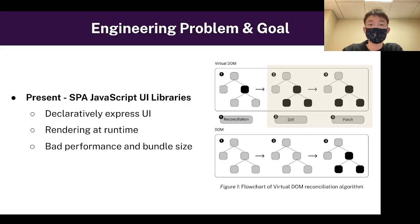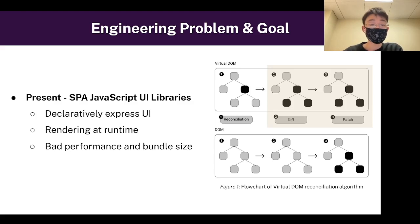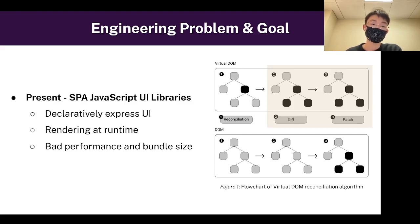Today, when you go on your device and visit a website, these websites are usually created with something called an SPA JavaScript UI library. The great thing about these libraries is that you can declaratively express the UI — instead of creating a complex procedure to build the user interface, the developer just provides the library with a model. However, these libraries utilize rendering at runtime, so all the work needed to put the website's content on your screen is done on your device, which can result in high loading times and bad performance.